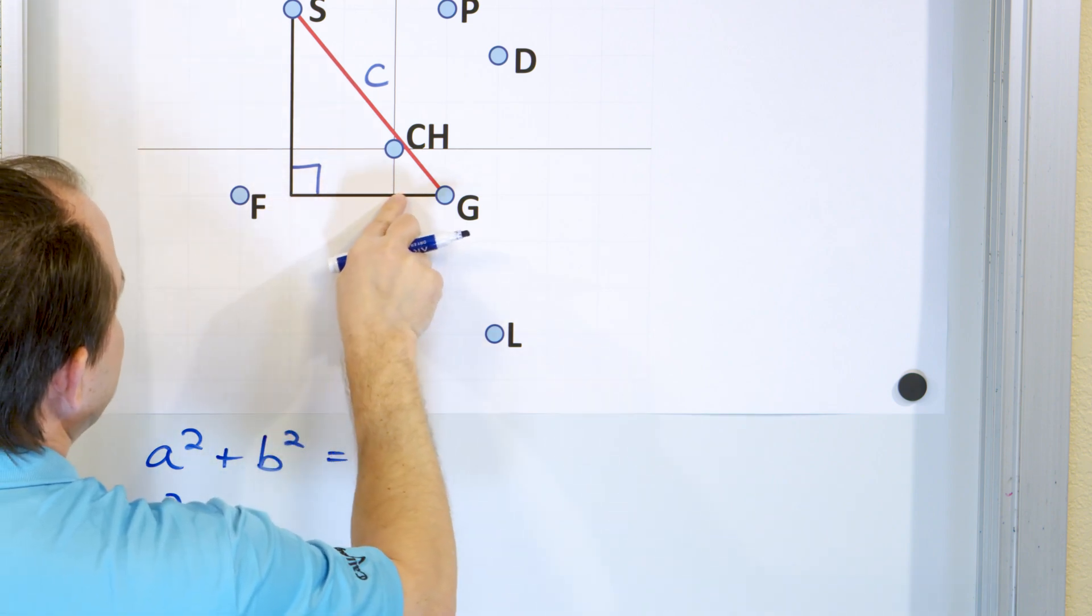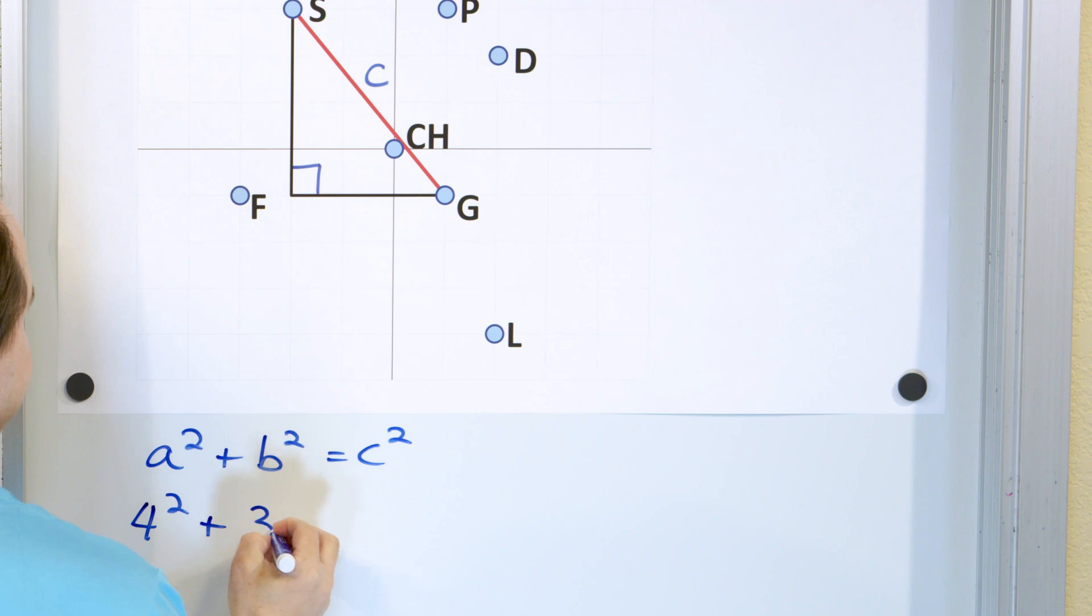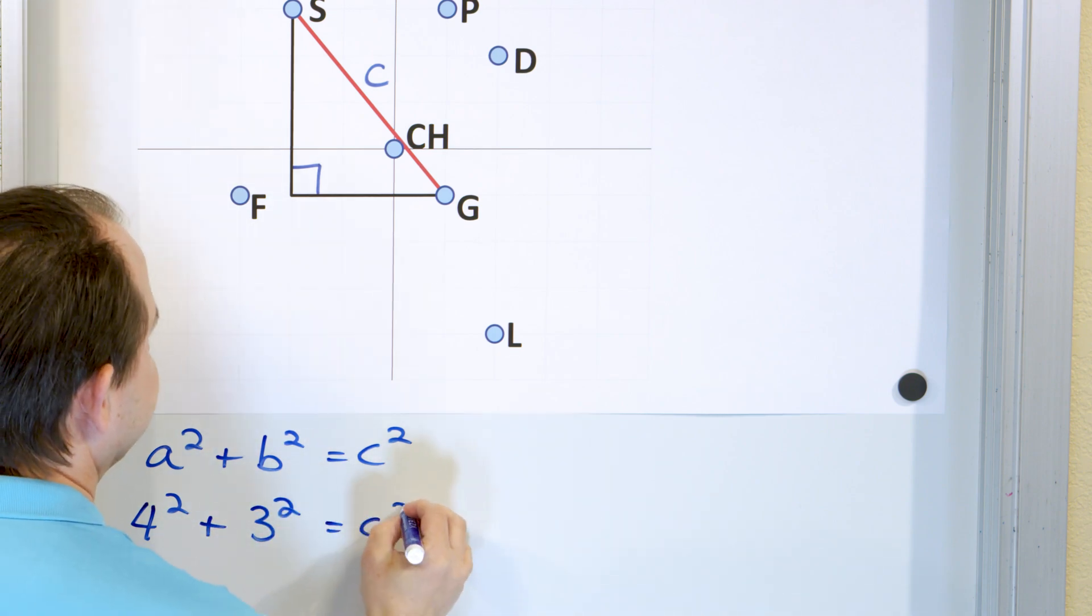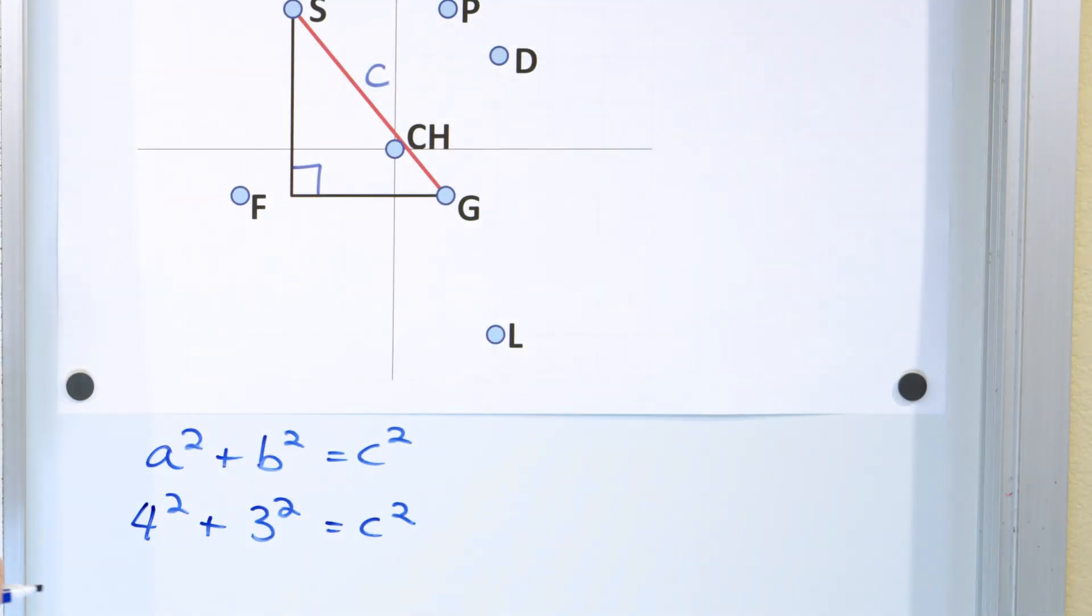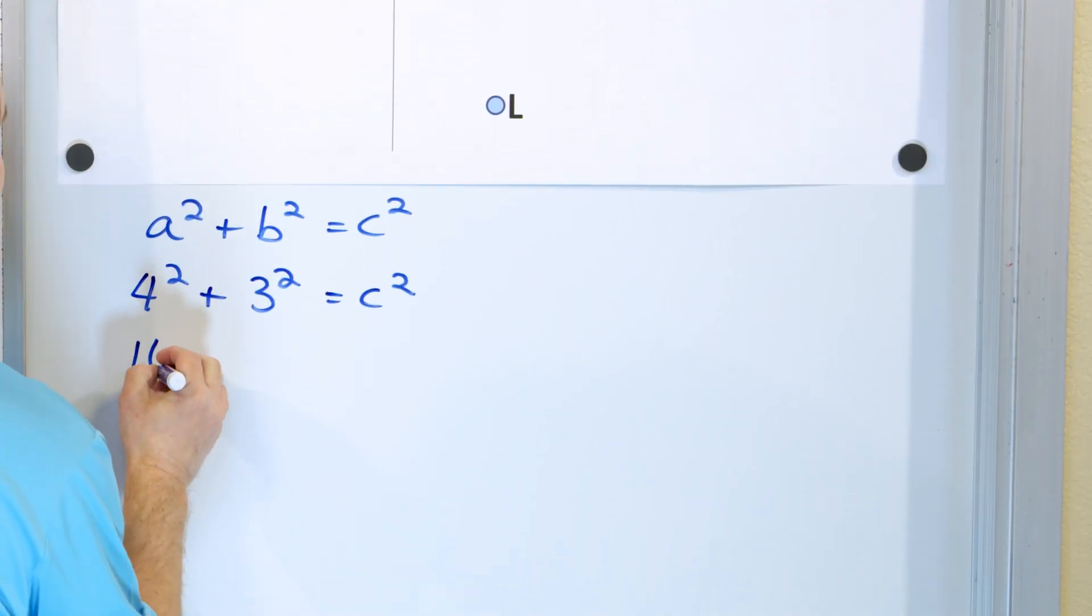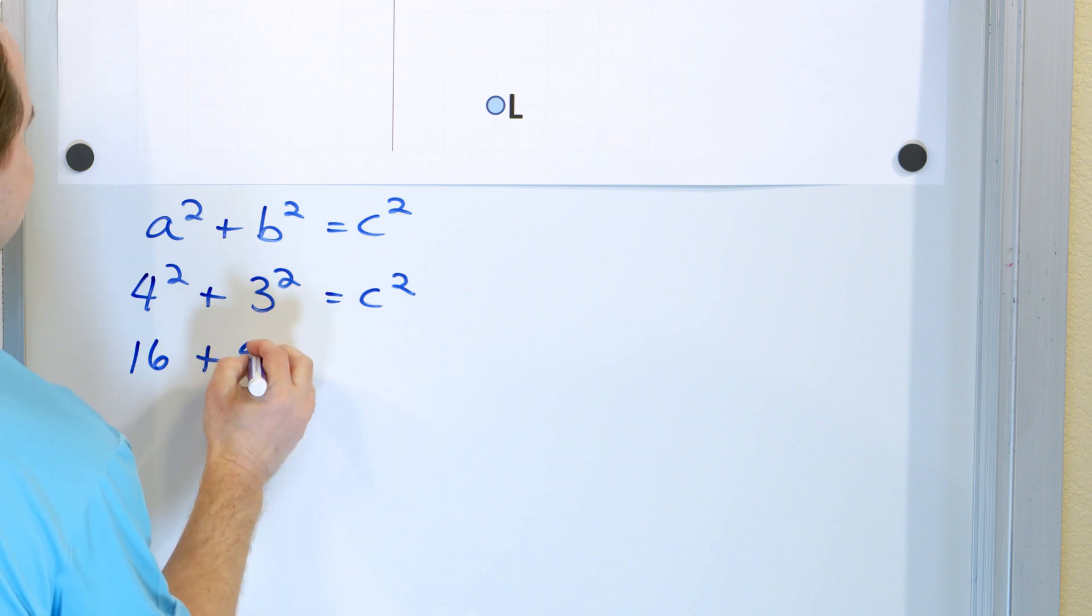And then starting here, one, two, three distance units in this direction. And that has to equal c squared, because this is the other side of the triangle.